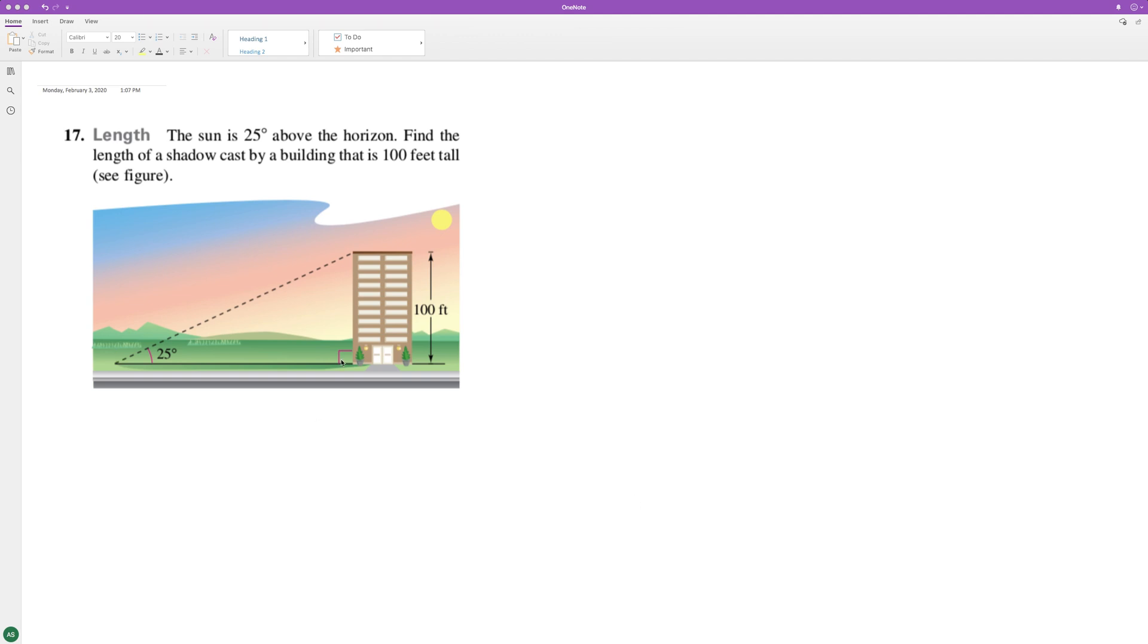For the following problem, we want to figure out the shadow that's cast by this building. In this instance, the shadow length is going to be the entire length here at the base of the building extended out.